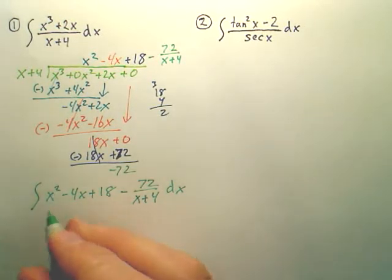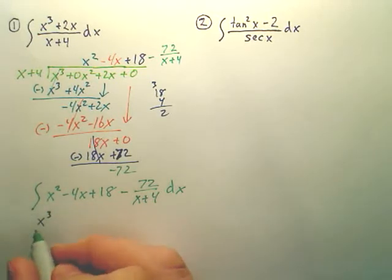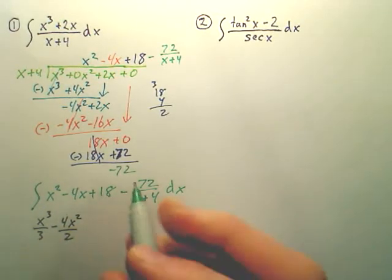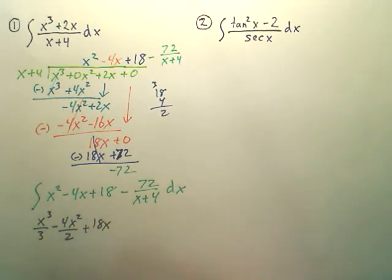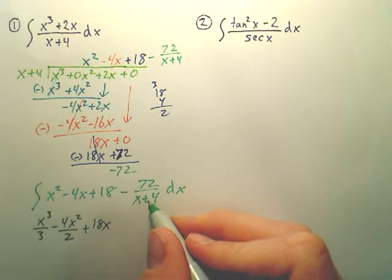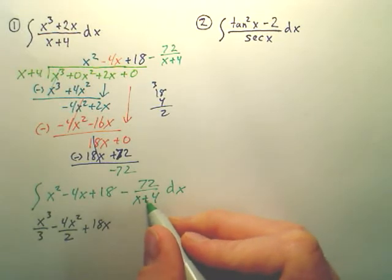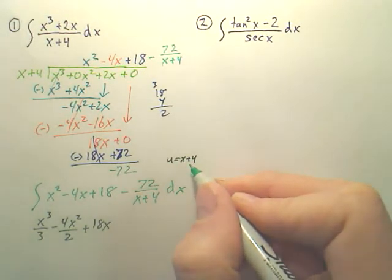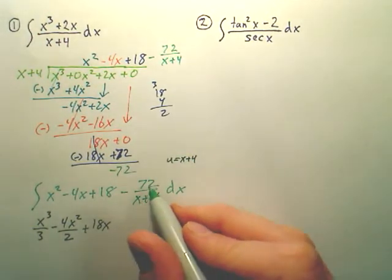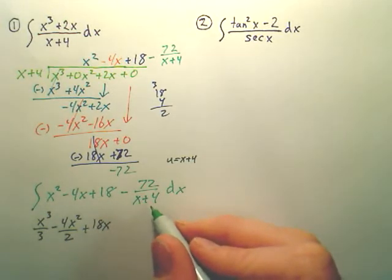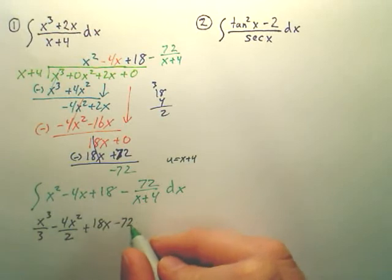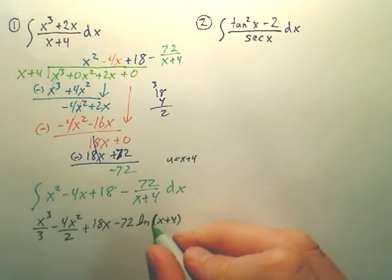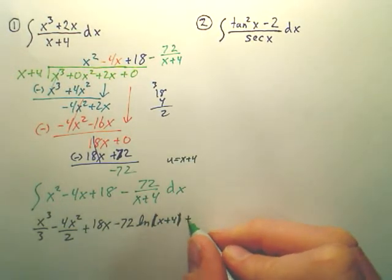So our answer, well, the integral of x squared is simply x to the third over 3. The integral of negative 4x is negative 4x squared over 2. The integral of 18 is 18x. All that was pretty simple. This one now is a u substitution. Now when you make u x plus 4, is that going to change anything when you integrate this? So isn't this simply going to be, take the 72 out, isn't this going to be natural log u? So this is going to be minus, the 72 goes out front, you have a natural log u, which is x plus 4, or should it be absolute value? Plus c.